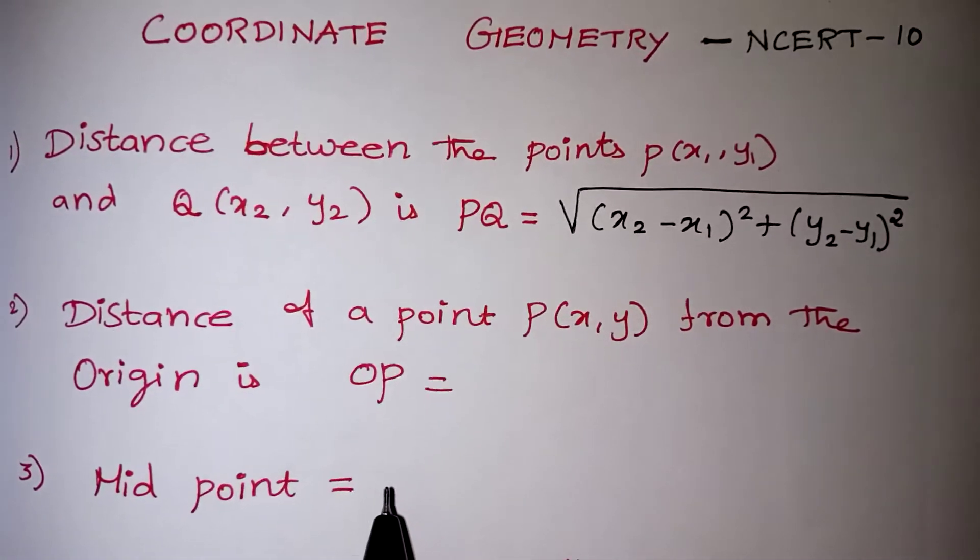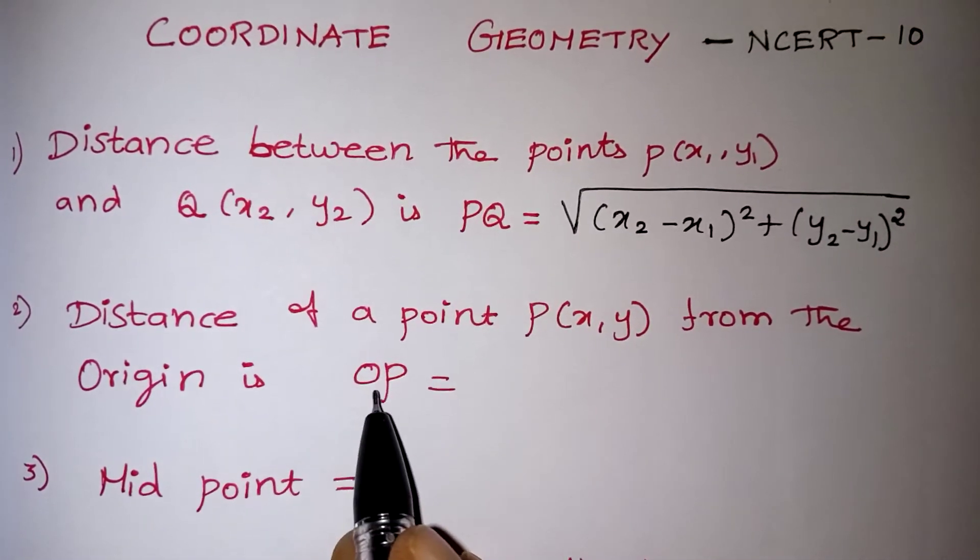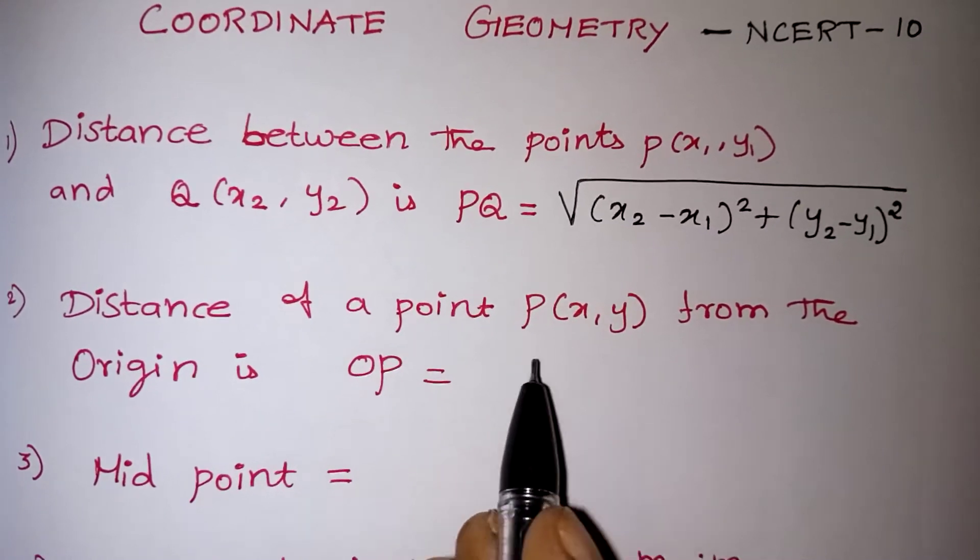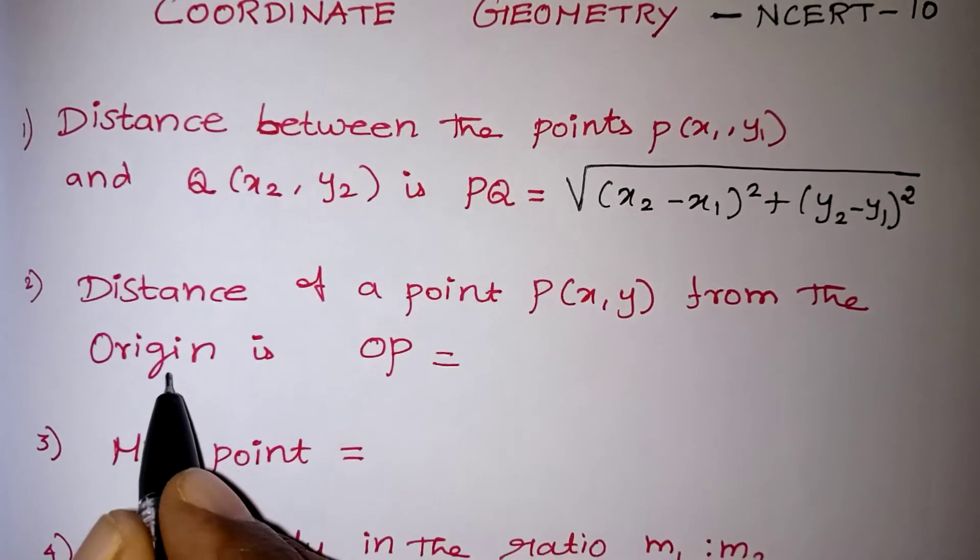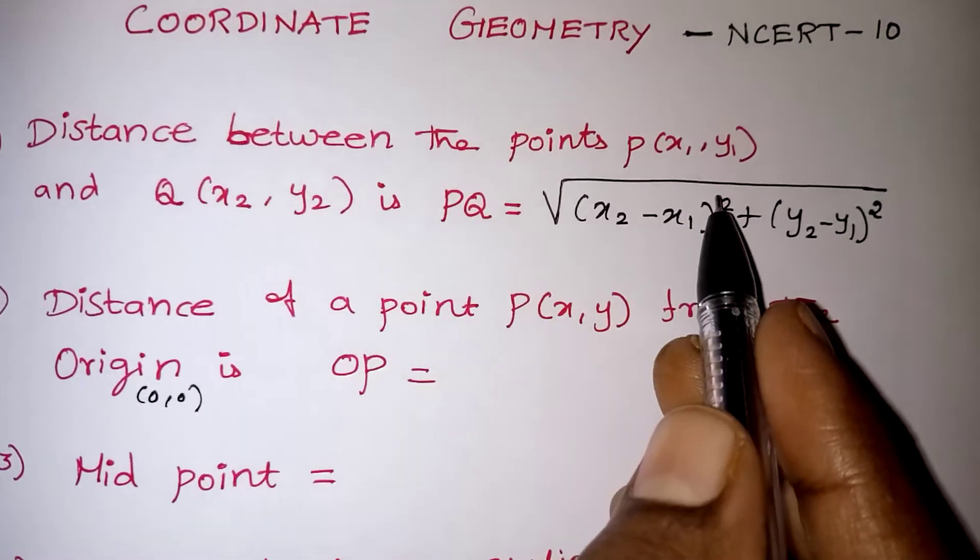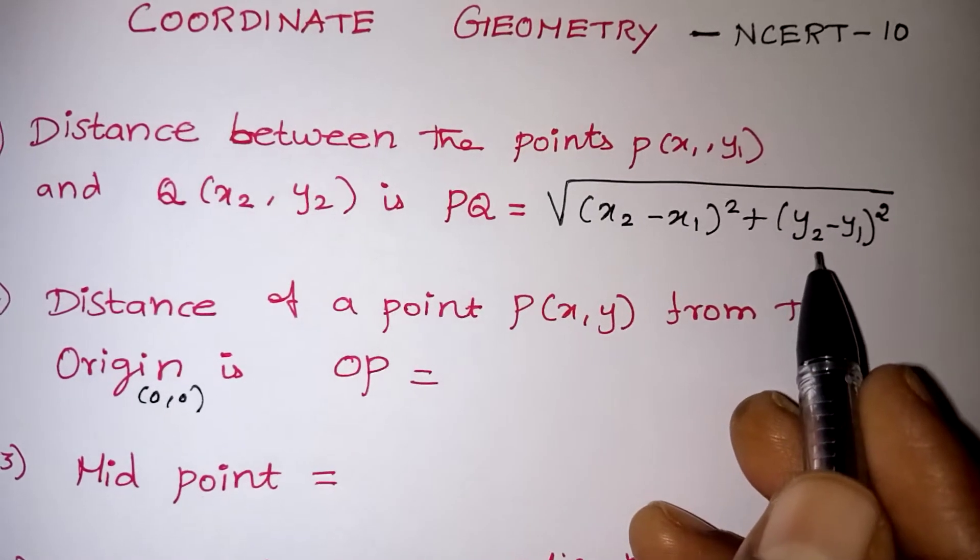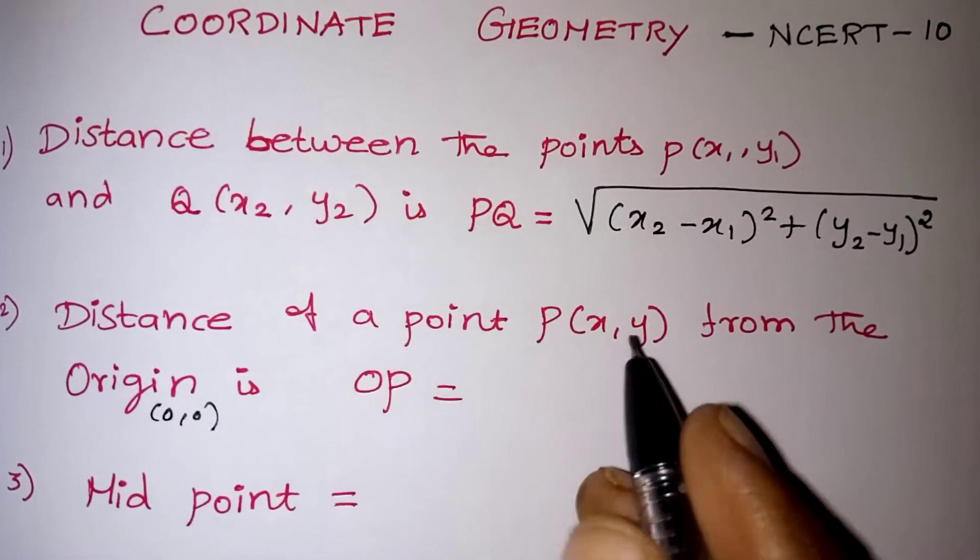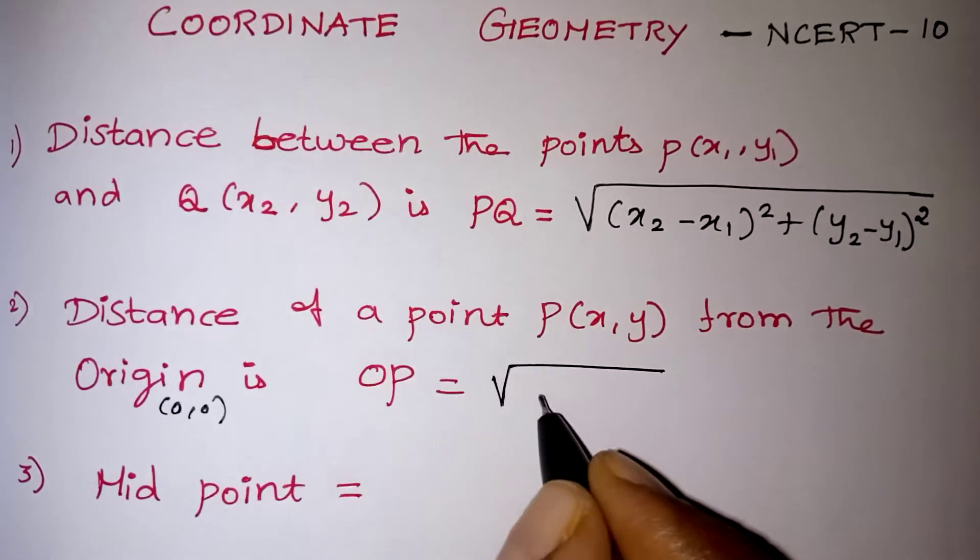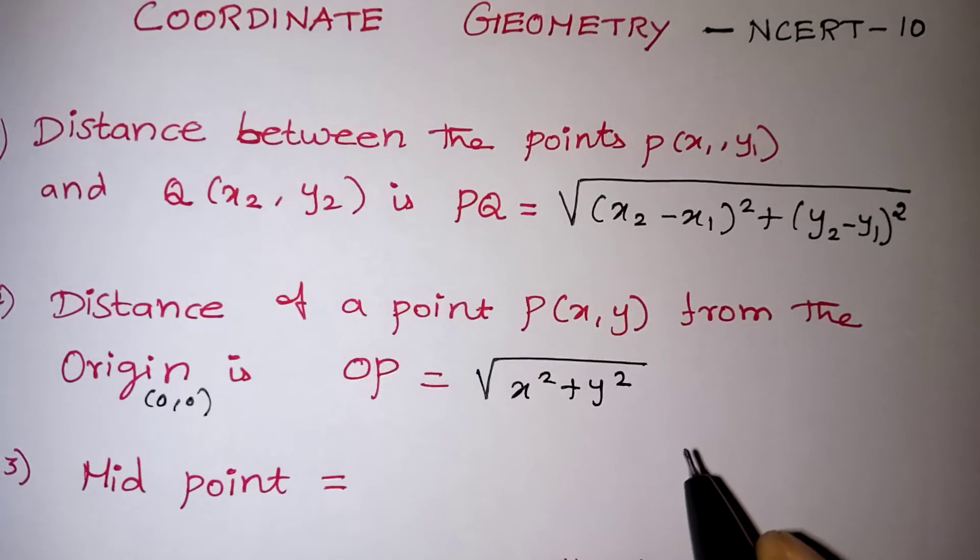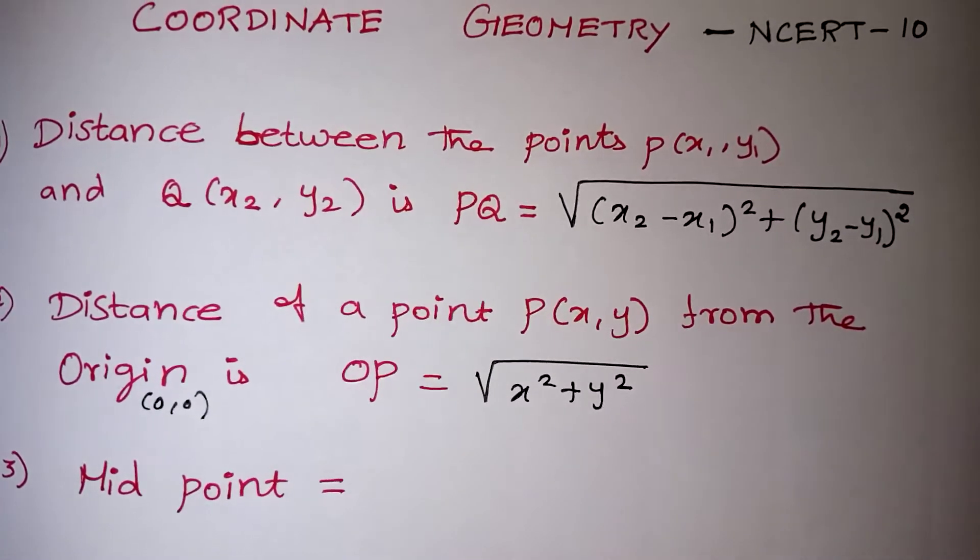The next formula, distance of a point from the origin. From the origin, only one point will be given. Origin means 0,0. So one of the point will become 0 and 0, the remaining one more number will be staying. That point is x and y. So formula is very easy, root of x squared plus y squared because one more point became 0.